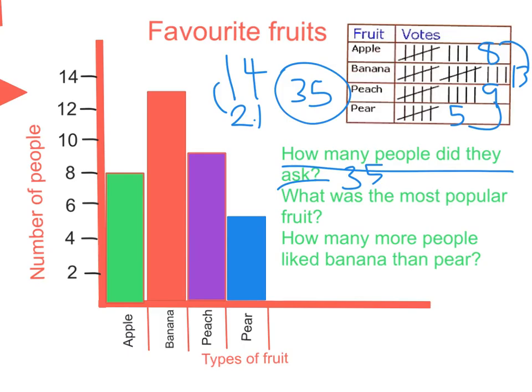Which fruit was the most popular? This is really easy to find out — you can clearly see by looking at the graph that banana is the most popular, with thirteen people choosing it.